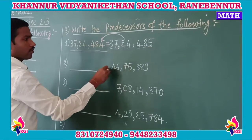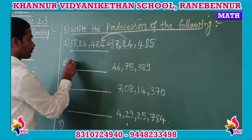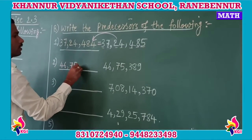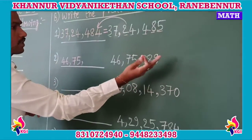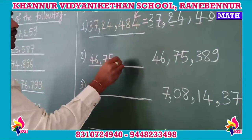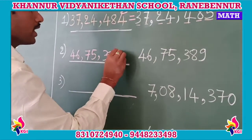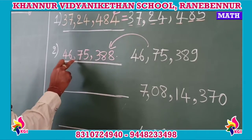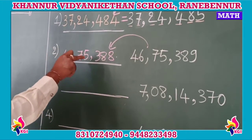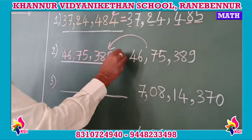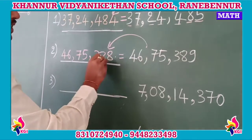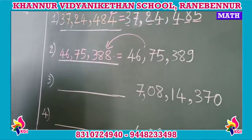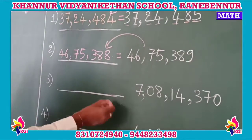The next number is 46,75,389. The predecessor — the just-before number — of 389 is 388. So 46,75,388 is the predecessor of 46,75,389.